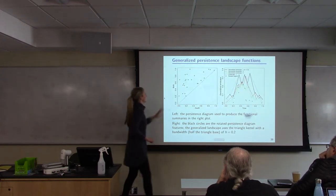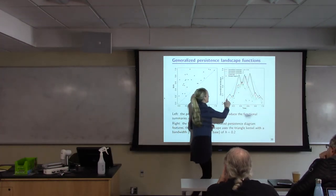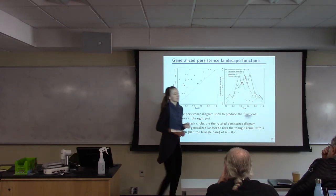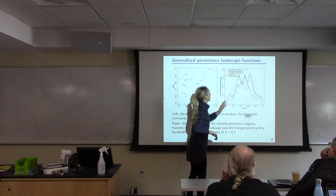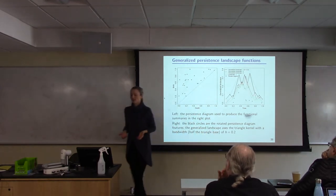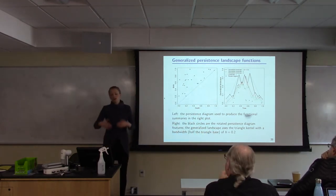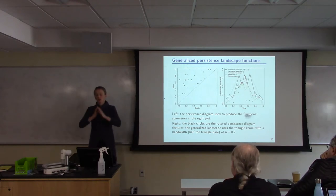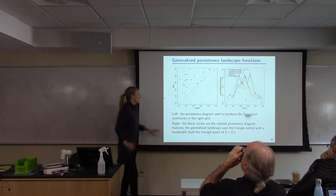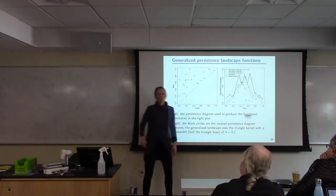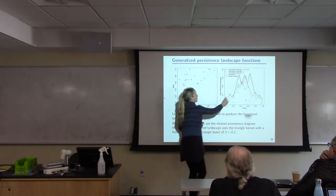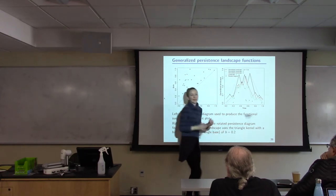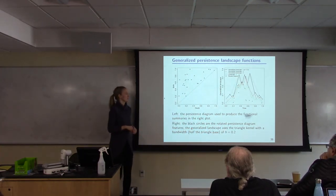And so this is our persistence diagram. The gray is an example of the first layer of a landscape function. And then the black, red, and green are some of the first few layers of the generalized landscape function, allowing for a triangle kernel with a varying width. And in this case, the width was set to just be 0.2. So you can see that you get more ridges with the generalized landscape function than the landscape function.